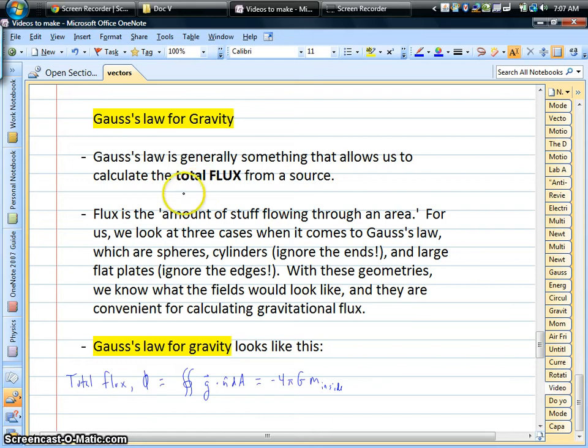So, Gauss's Law is the formal way of defining something called flux. I like a real technical definition for flux: the amount of stuff flowing through an area. Stuff can be anything. For gravity, we'll be talking about the stuff being the gravitational field, the thing that causes the gravitational force, at least in a classical sense. And the three cases that we focus on with Gauss's Law are spheres, cylinders, and plates, flat things.